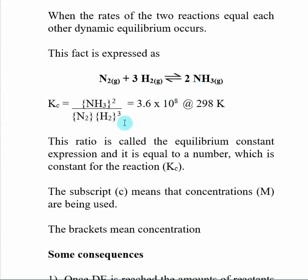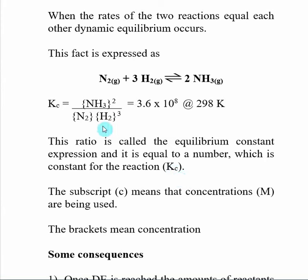There are many different K values — a K value means an equilibrium constant. It relates to the concentrations of the species in a given equilibrium problem. We need to describe which type of equilibrium equation we're using. The first one is called Kc, which means we talk about the species in terms of their concentration in molarity. When you see brackets inside the equilibrium expression, it means we're talking about those species in terms of molarity.